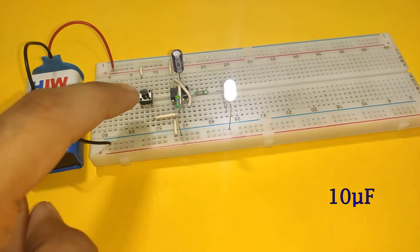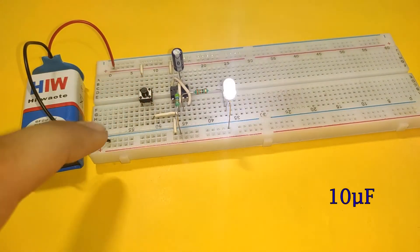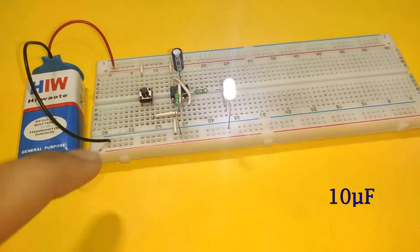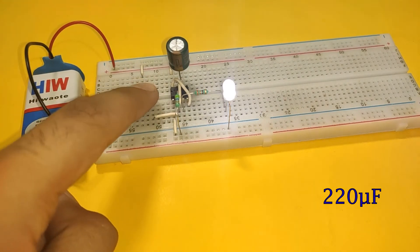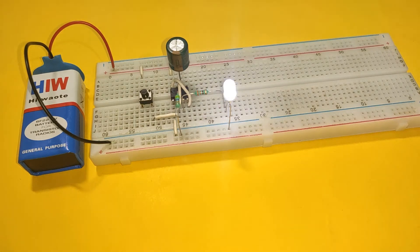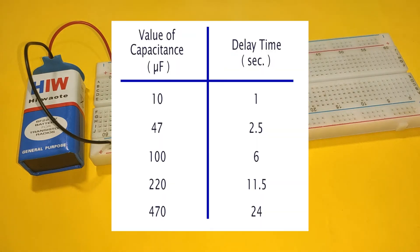You can decrease or increase the delay time by changing the value of capacitance. Increasing the capacitance increases the time for which the LED remains off. You can refer to this table to see the relationship between the capacitance and the delay time.